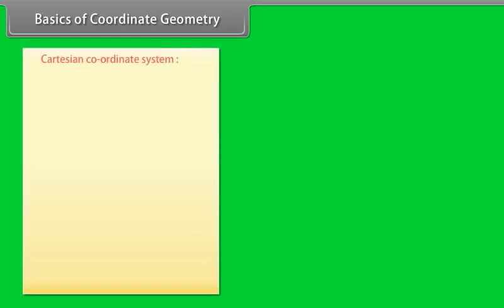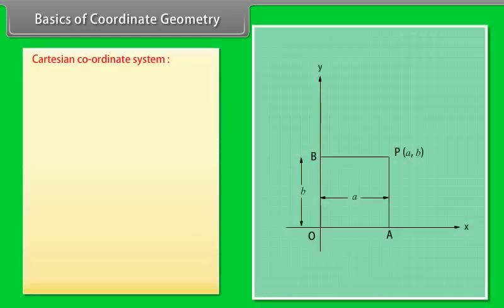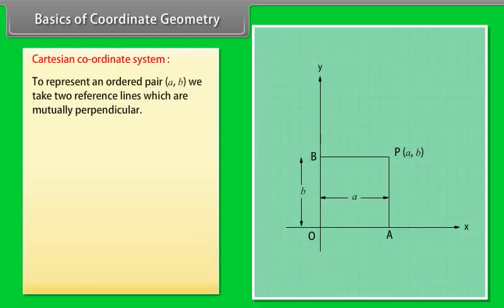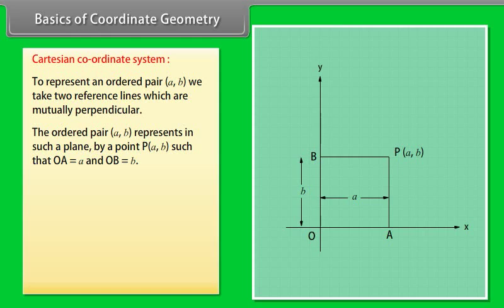Basics of Coordinate Geometry — Cartesian Coordinate System: To represent an ordered pair (A, B), we take two reference lines which are mutually perpendicular. The ordered pair (A, B) represents in such a plane by a point P(A, B) such that OA is equal to A and OB is equal to B. This system is called the Cartesian coordinate system.